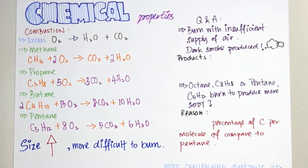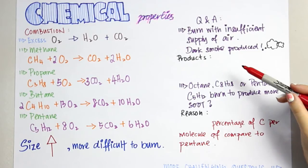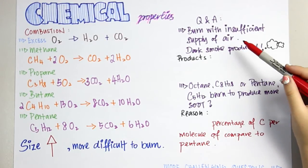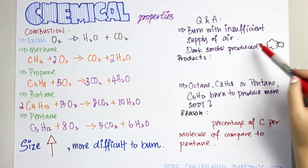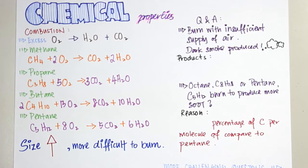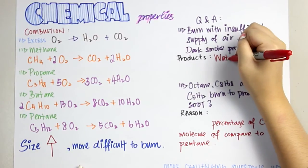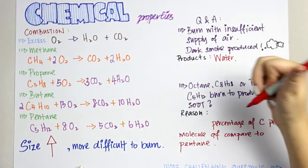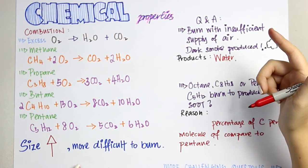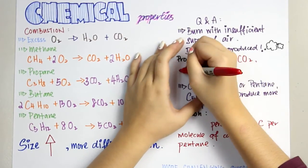Here we have some questions and answers. The question is: if butane is burnt under insufficient supply of air, we can observe dark smoke is produced. What are the products? There are four of them: the first one is water, followed by carbon dioxide, carbon monoxide gas, and carbon.